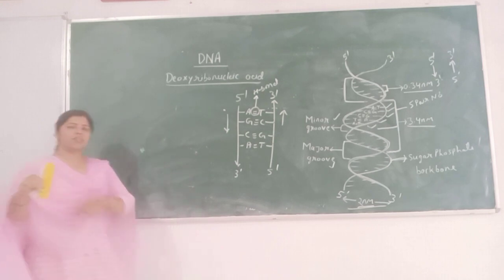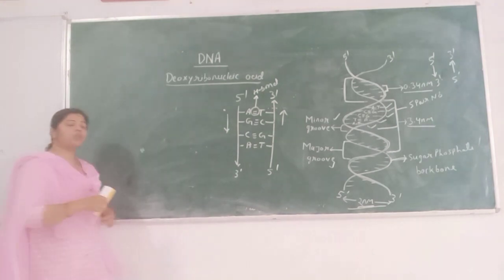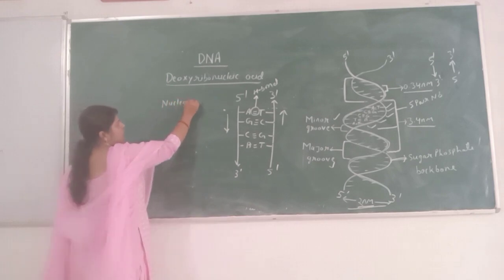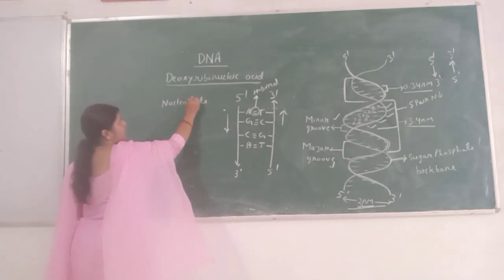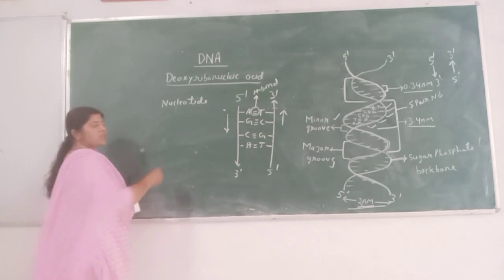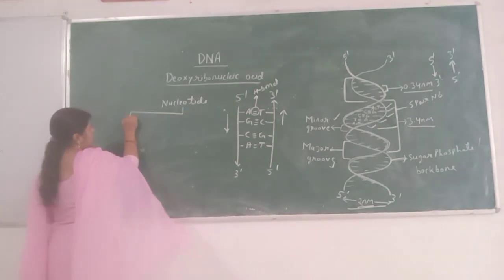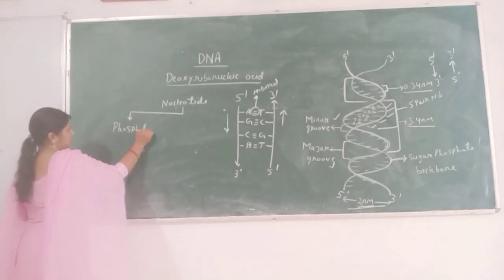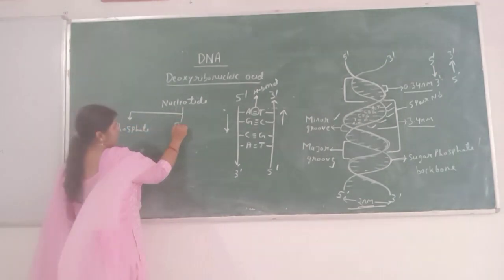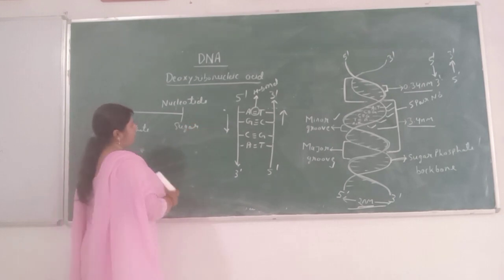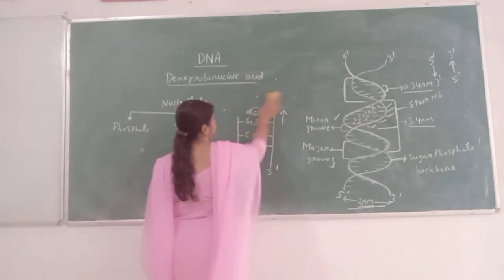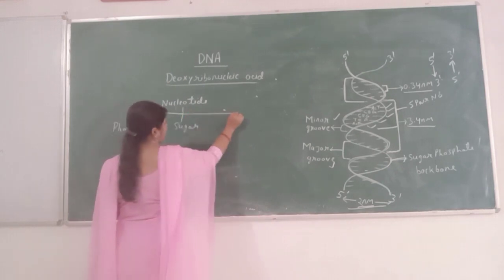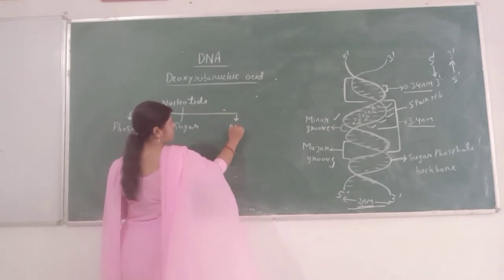The polynucleotide strands of DNA consist of nucleotides. This nucleotide is a monomer unit of the polynucleotide. This nucleotide consists of three components: phosphate, sugar, and nitrogenous bases.